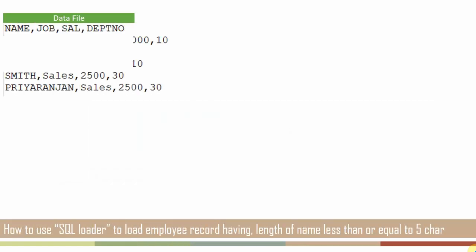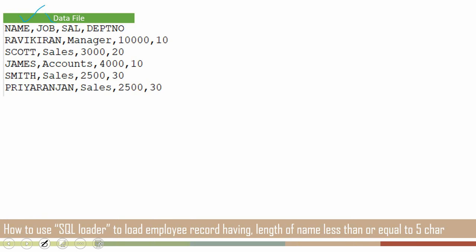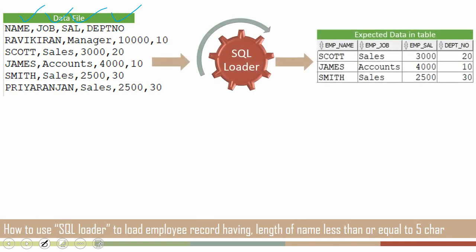We have a data file containing employee information like employee name, job, salary, and department number. The expectation is to use SQL Loader to load this information into a database table, but with one restriction: we need to exclude records based on the length of a specific field. We need to exclude records whose employee name length is more than five characters — for example, Ravikiran and Priyaranjan — and only insert records like Scott, James, and Smith.